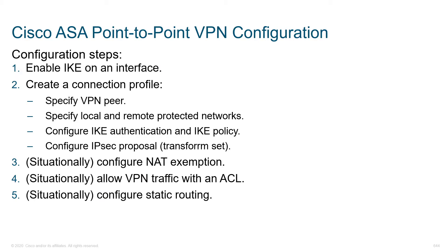Let's take a more detailed look at the configuration steps required to build a point-to-point VPN on the ASA. First, we want to make sure that IKE is enabled on the interface. A lot of times this is enabled by default, but it's something we just want to double check. We never want to assume.